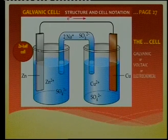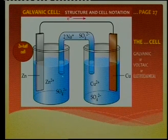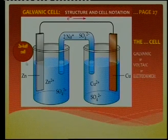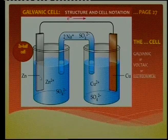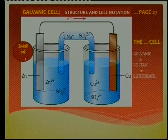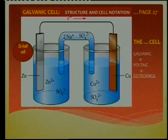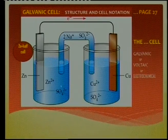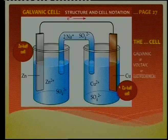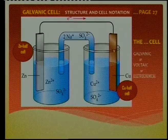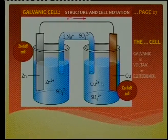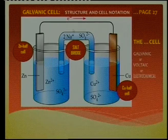Do you know that this part — this beaker, plus this metal electrode, and this solution, the electrolyte — is called the zinc half cell? A cell is a beaker with an electrode and the electrolyte in it. This side is therefore the copper half cell consisting of two parts, and then we have a salt bridge.